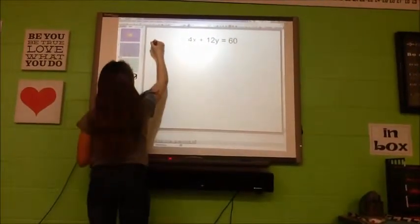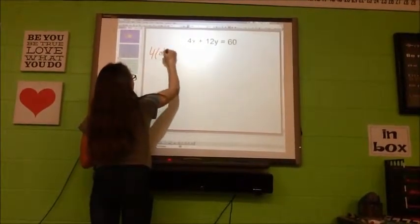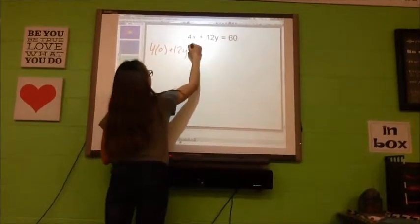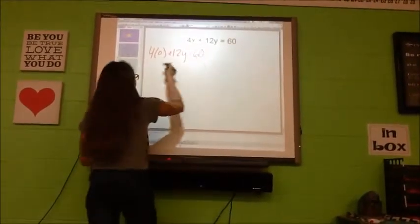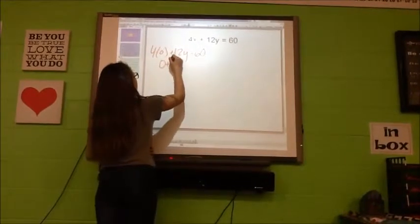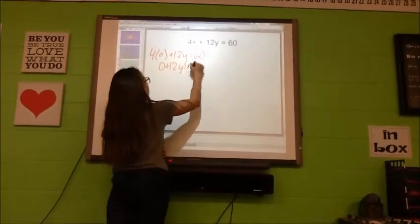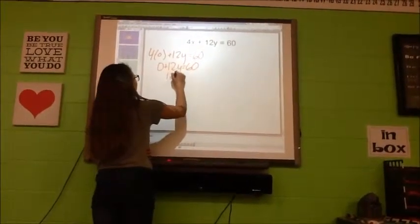To find the Y you replace X with 0. So it's 4 times 0 plus 12Y equals 60. And then 4 times 0 is 0 plus 12Y equals 60. So that's 12Y equals 60.